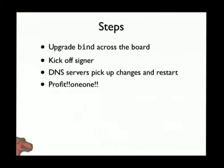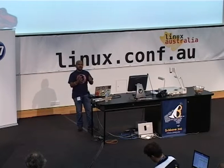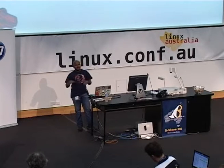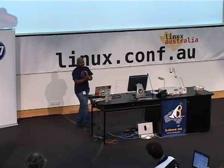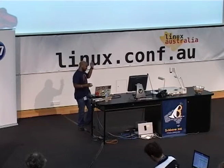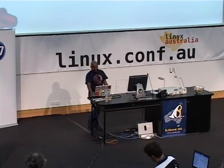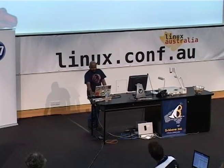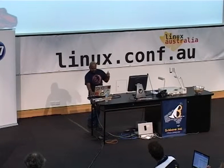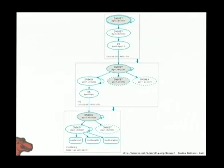The steps are pretty simple. Upgrade BIND across the board — we rebuilt BIND from RHEL 6 beta back in September. It was a straight rebuild because we wanted BIND 9.7 and above. We put it in a separate repo that sat only on the DNS servers. Upgraded BIND, kicked off the signer, the process kicked in, and everything pretty much just worked. I'll show you some of the commands to verify stuff if we have time at the end.